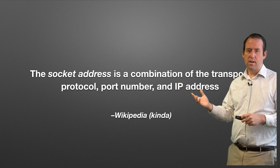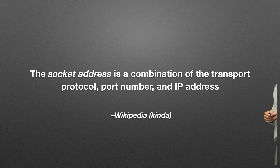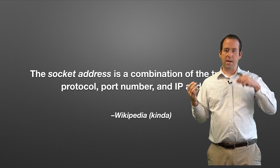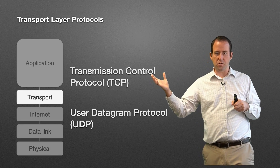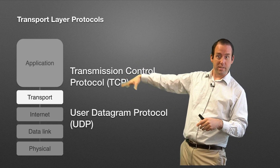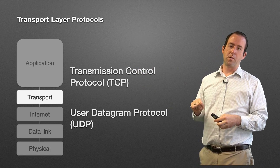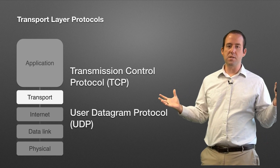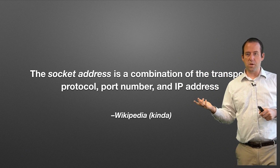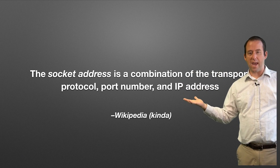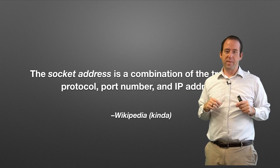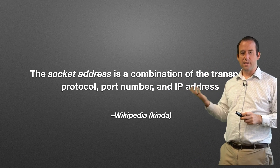A socket is a combination of the transport protocol, port number, and IP address. So you have an IP address plus a port number plus the protocol — put them together and you have a socket, essentially a computer making a plug-in that other things can connect to in order to send and receive data. The key transport layer protocols are TCP — the Transmission Control Protocol, the famous TCP from TCP/IP — and UDP, the User Datagram Protocol. Both work but do different things, which we'll cover in more detail later.